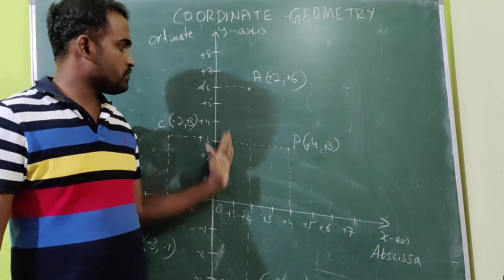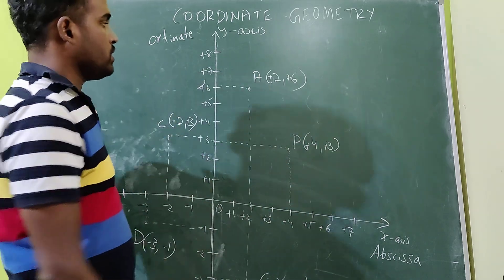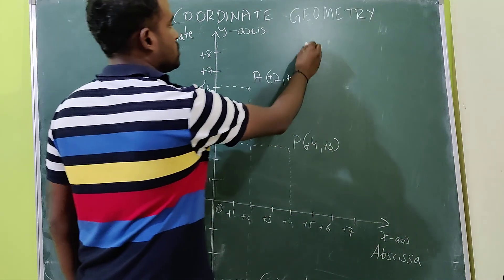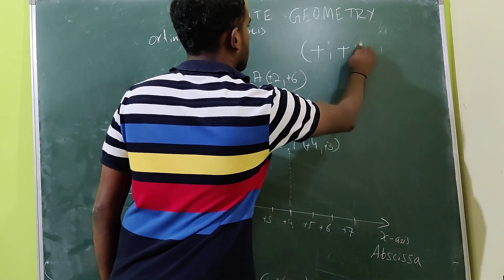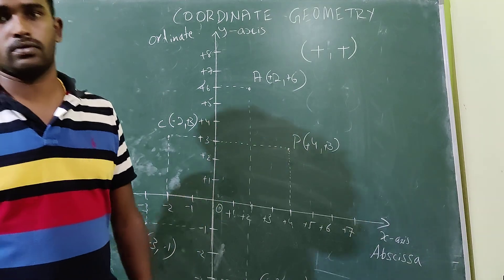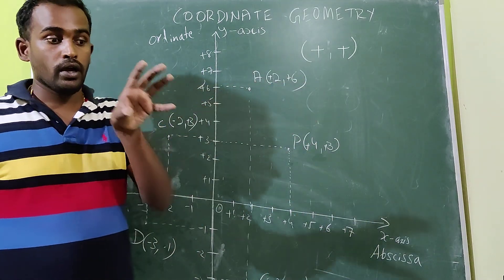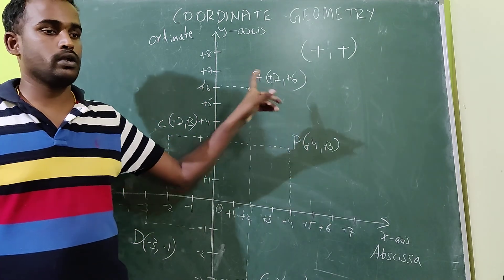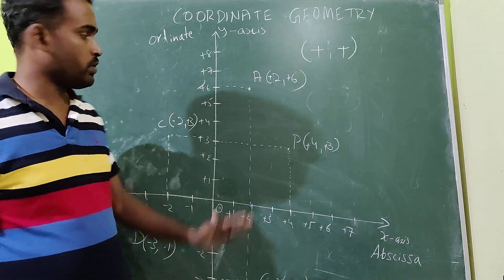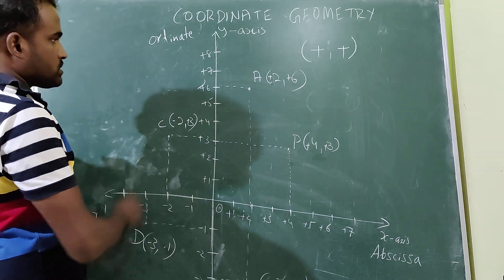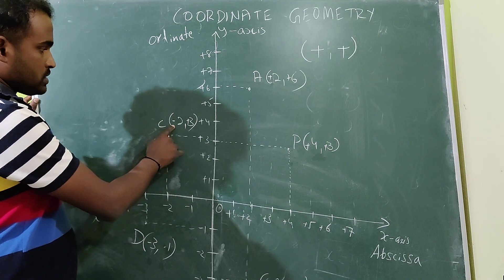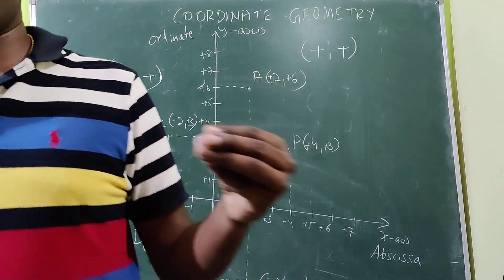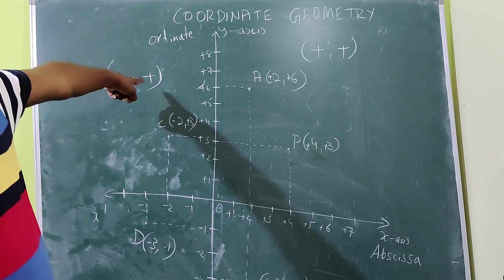Here one thing is common, students. In the first quadrant, the values are always positive and positive. x is positive, y is also positive. In which quadrant are both x and y positive? In the first quadrant. Now let us move to the second quadrant. In the second quadrant, first always minus, next plus — therefore minus, plus. x value is always minus, y is plus.